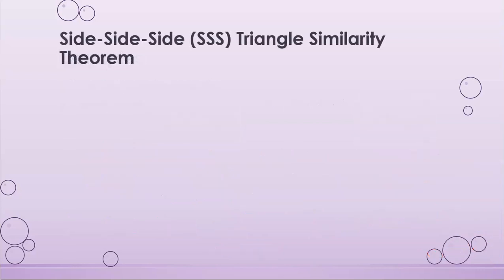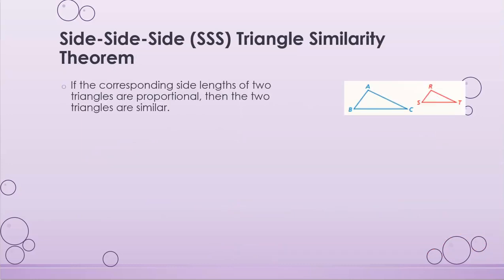My next similarity theorem is the Side-Side-Side triangle similarity theorem. This states that if the corresponding side lengths of two triangles are proportional, then the two triangles are similar. All three sides must share the same scale factor — AB to RS, BC to ST, and CA to TR.